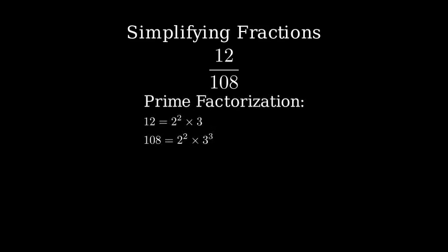First, let's write both numbers in their prime factorization. 12 equals 2 squared times 3, and 108 equals 2 squared times 3 cubed.